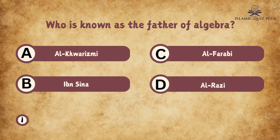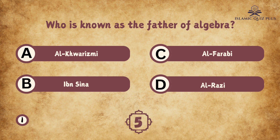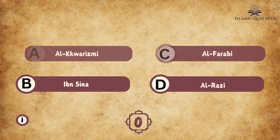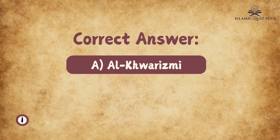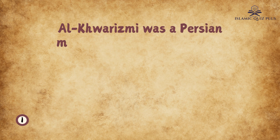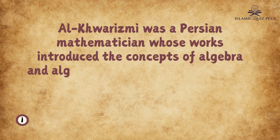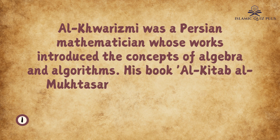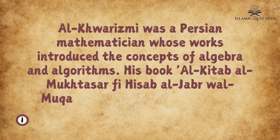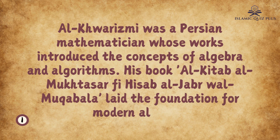Question 1: Who is known as the father of algebra? A. Al-Khwarizmi, B. Ibn Sina, C. Al-Farabi, D. Al-Razi. The correct answer is A. Al-Khwarizmi. Al-Khwarizmi was a Persian mathematician whose works introduced the concepts of algebra and algorithms. His book Al-Kitab al-Mukhtasar fi hisab al-Jabr wal-Muqabala laid the foundation for modern algebra.